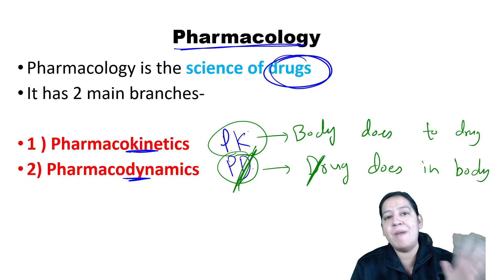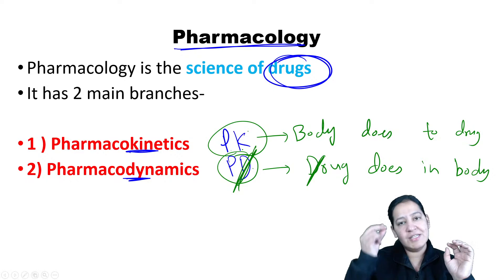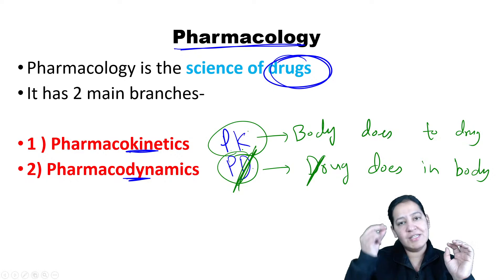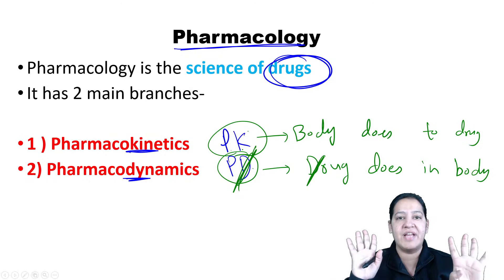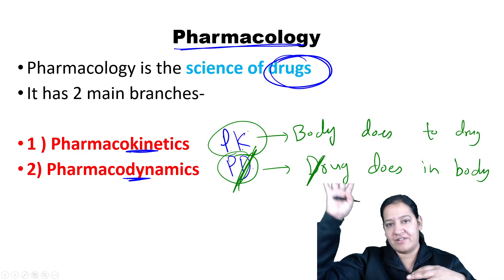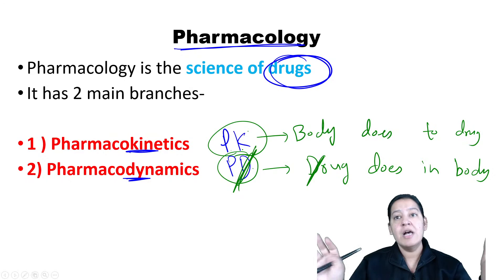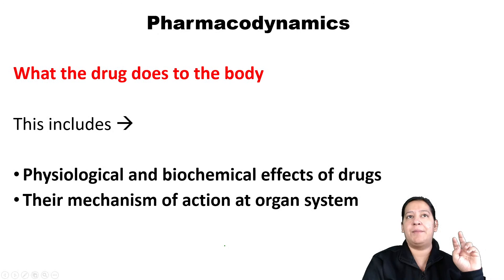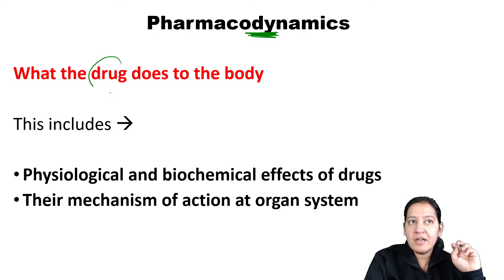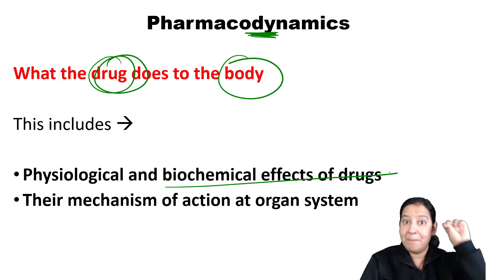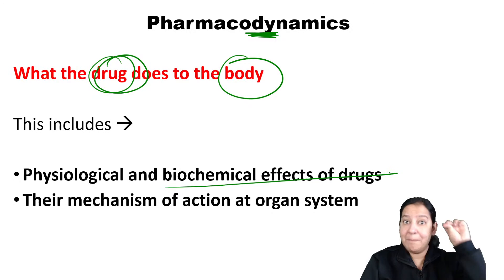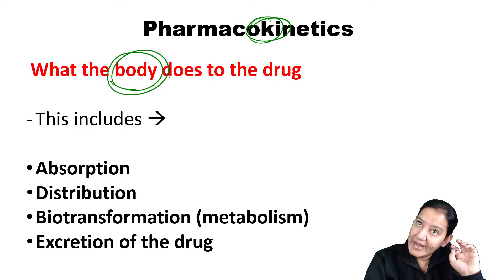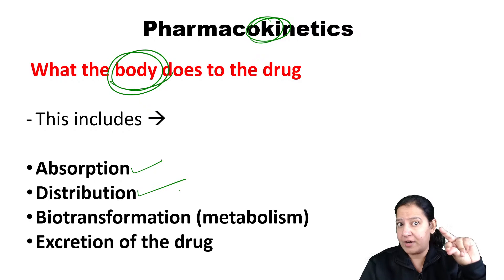After the drug acts at its site of action, the body must excrete it. Excretion is done by the kidney — the drug is excreted in urine. But before excretion, the drug must be metabolized. So pharmacokinetics has four parts: absorption, distribution, metabolism, and excretion — the mnemonic is ADME. Pharmacodynamics has only one part: mechanism of action.